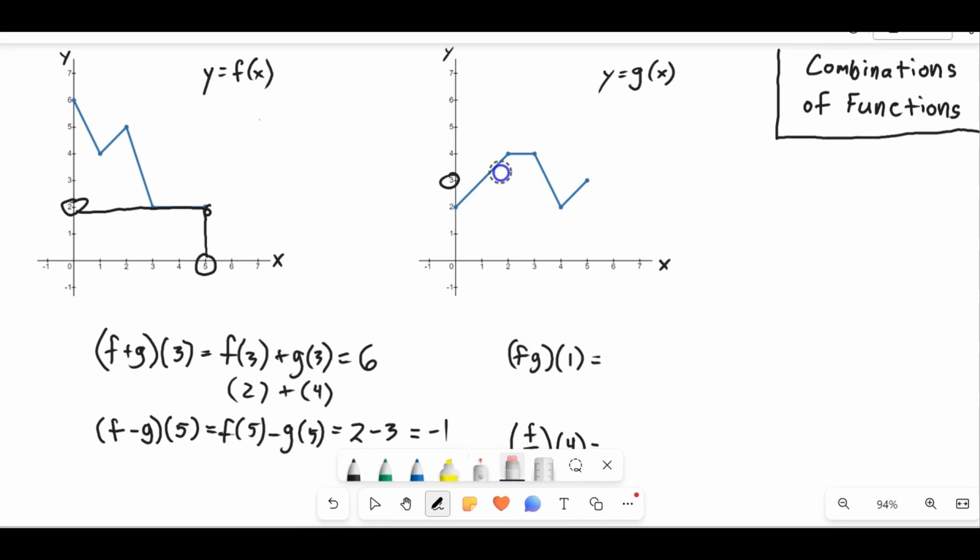All right, now let's try our f times g here. f times g of 1 is going to be f(1) times g(1). So we need to find out what is f(1). So we'll go over here to f, and we'll go to 1, and we'll go up here, and it looks like it's 4.